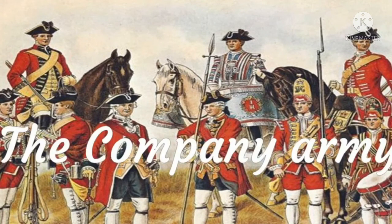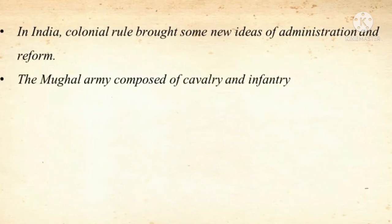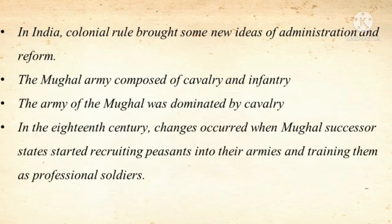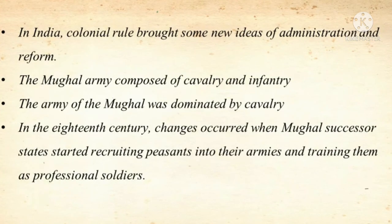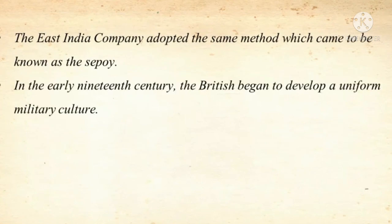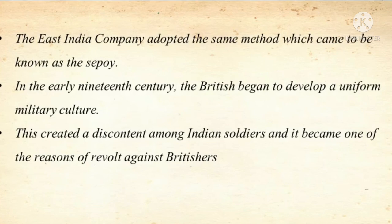The British used the company army in India. Colonial rule brought some new ideas of administration and reform. The Mughal army was composed of cavalry and infantry, dominated by cavalry. In the 18th century, changes occurred when Mughal successor states started recruiting peasants into their armies and training them as professional soldiers. The East India Company adopted the same method, which came to be known as the Sepoy system. In the early 19th century, the British began to develop a uniform military culture. This created discontent among Indian soldiers and became one of the reasons for the revolt against the British.